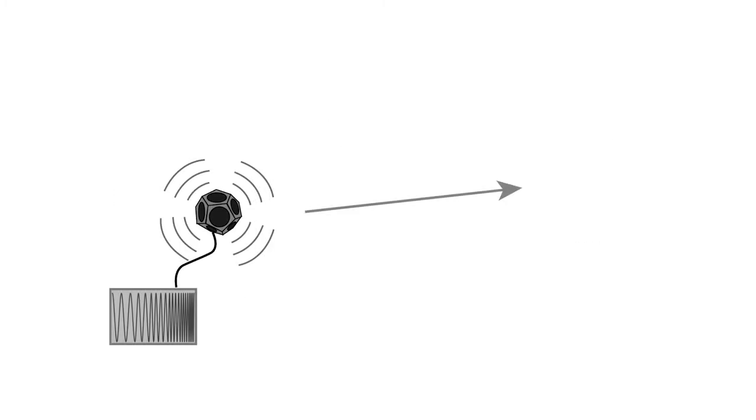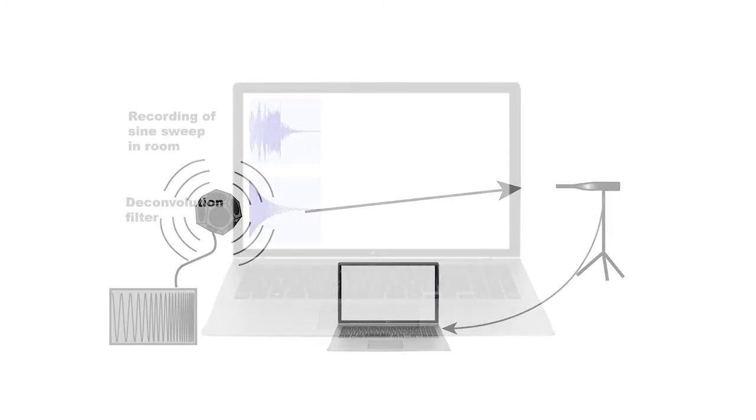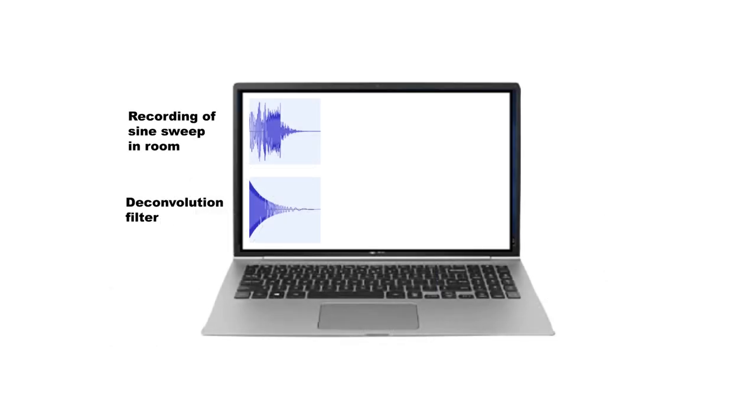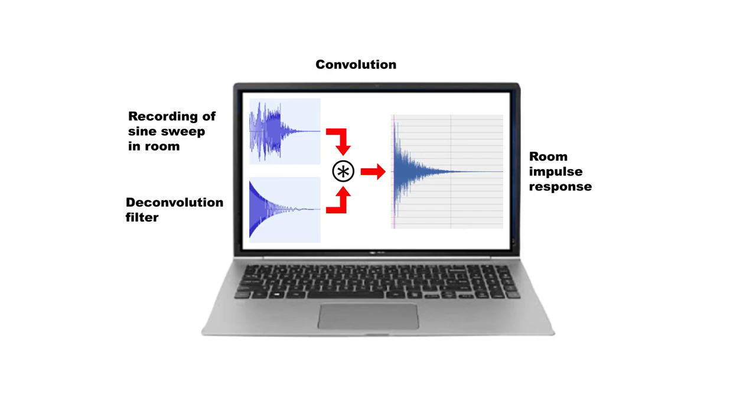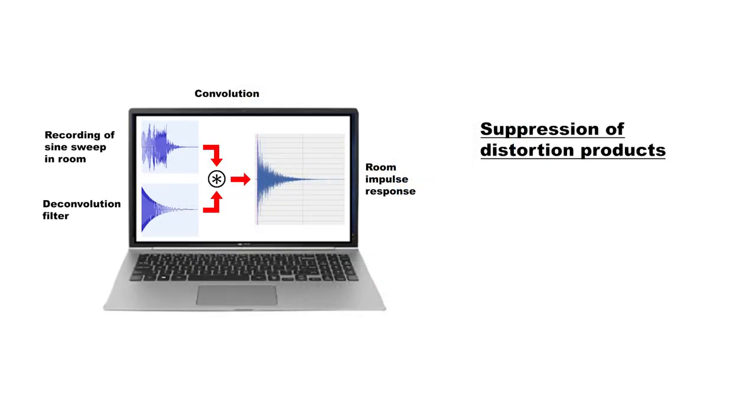When the sweep is emitted into the room by a speaker and recorded at the receiver position, the microphone, it is analyzed by a software. This process is really good at suppressing distortion products, whether that is due to distortion in the measurement chain or due to time variances in background noise. This could be turbulence in the room, people walking, or similar.